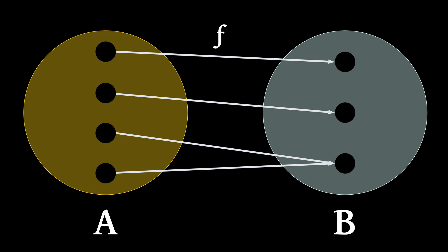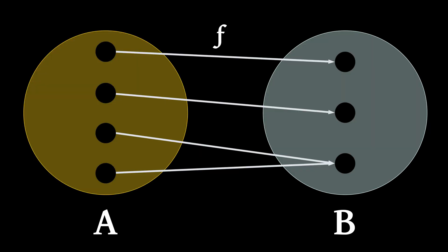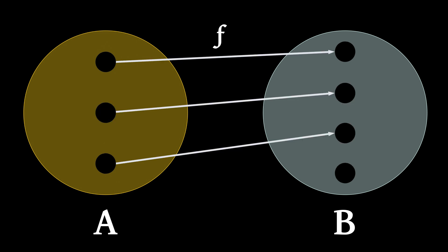Let's look at the last injection diagram again. Though this function is not injective, it is surjective, because the definition states that there must be at least one element in A such that f(a) equals b, which allows for more than one element in set A to map to the same element in set B. Hence the entire range is the codomain B. However, this other diagram is not surjective — every element of the codomain must have at least one element of the domain that maps to it, which is not the case here.